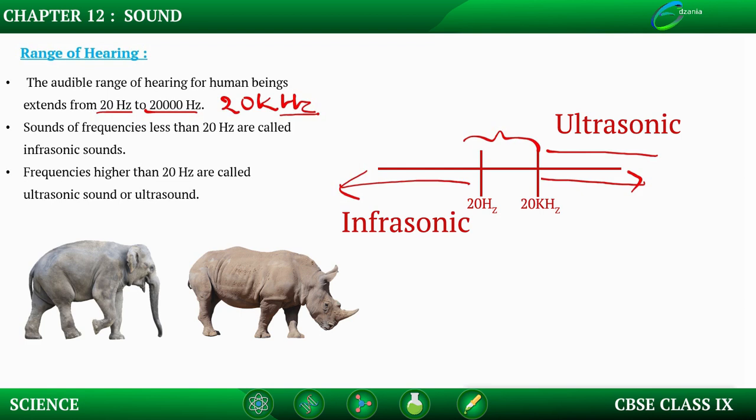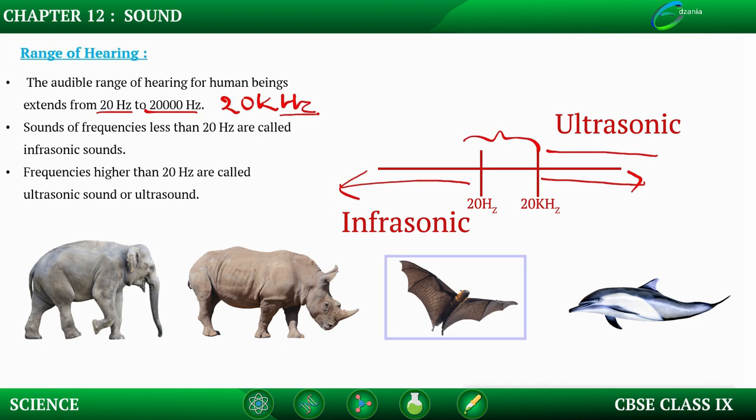Similarly, there are ultrasonic frequencies higher than 20 kilohertz. Again, there are some life forms who can detect it like bats or dolphins. They use the ultrasonic frequency. Using those ultrasonic frequencies, bats are hunting in the night, hunting in the dark. They are using the concept of reflection of ultrasonic waves, and that's how they are locating their prey.